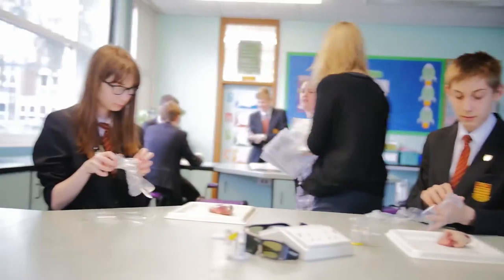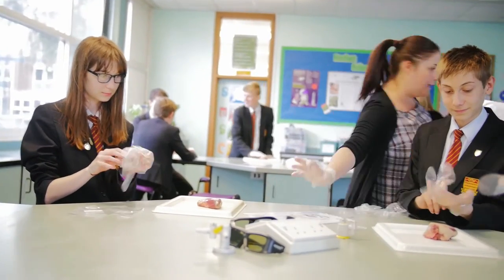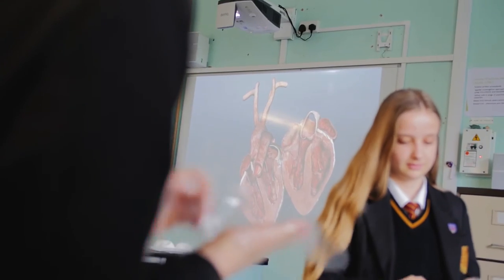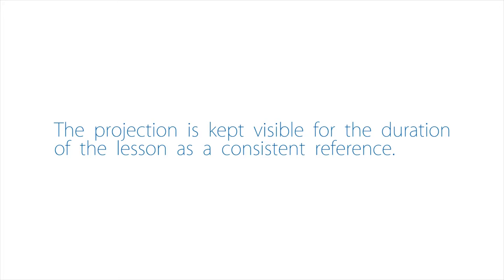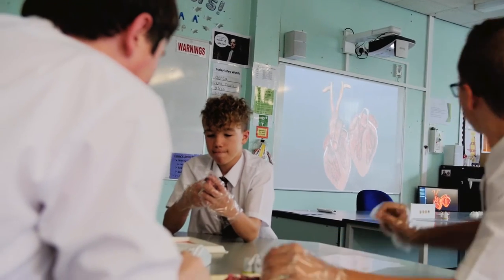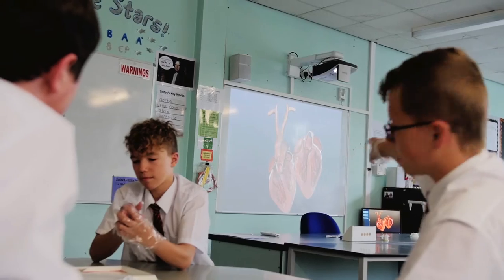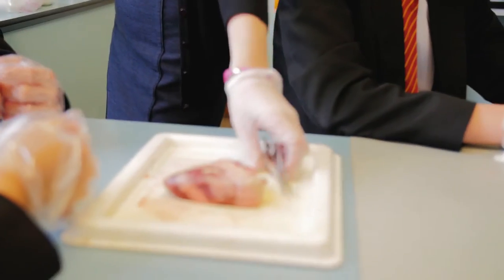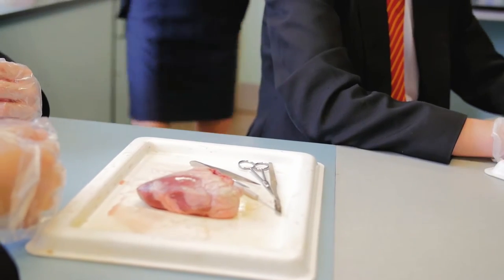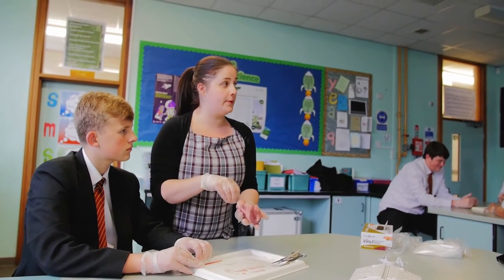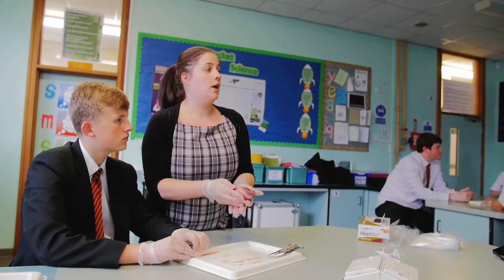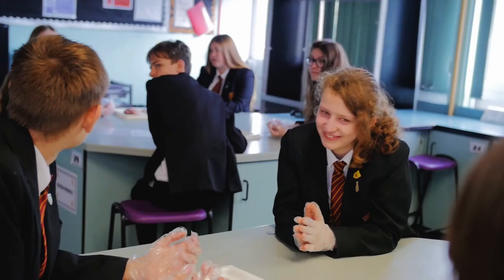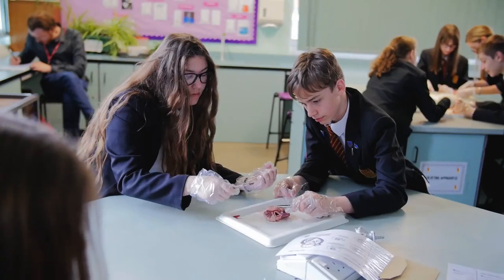Right, put your gloves on and actually pick up your heart. Have a feel, have a touch of it. You're looking for which side you think is the left-hand side — the side that's thicker, that's going to push the blood all the way around the body. You're going to cut down and up, so it's a big large V. Be careful how you are cutting, but you should then be able to fold it up and see inside. The other option is to cut straight down the pulmonary artery — both will allow you to see inside the heart.